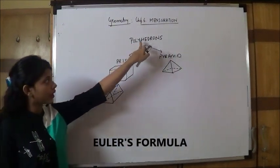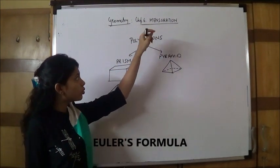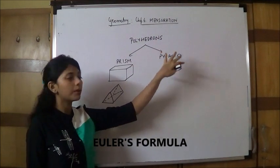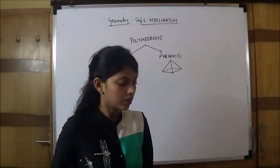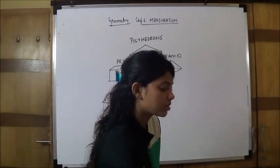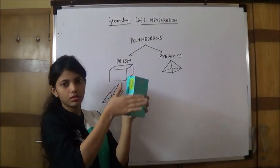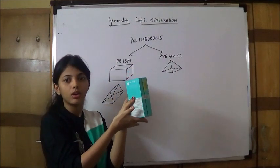Next, we have the concept of polyhedrons. There are two types of polyhedrons: prism and pyramid. Before moving on to that, what are polyhedrons? The figures which have straight surfaces, plain straight surfaces, are polyhedrons.